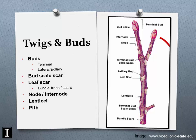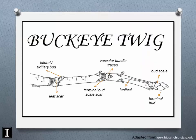Moving to twigs and buds: we'll talk about terminal and lateral buds, axillary buds, bud scale scars, leaf scars, nodes and internodes, lenticels for air exchange, and pith — all of which help identify trees to the species level. On a buckeye twig, the terminal bud is at the end of the twig, and the lateral buds are along the sides. Know the difference between a terminal and a lateral bud.